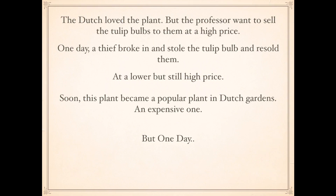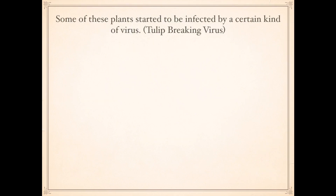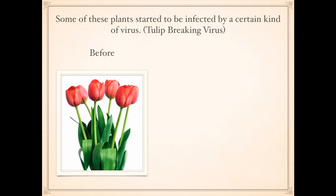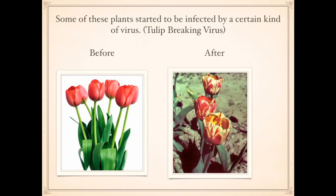But one day, some of these plants started to be infected by a certain kind of virus — to be exact, they are called TBV, Tulip Breaking Virus. And this is a bizarre virus. Before, the tulip bulbs looked beautiful. But after they get the virus, they look even more beautiful — exotic.